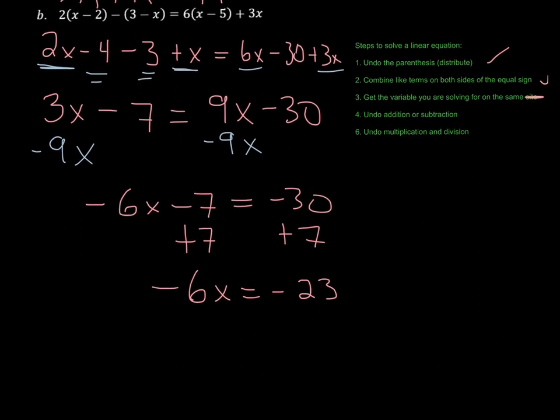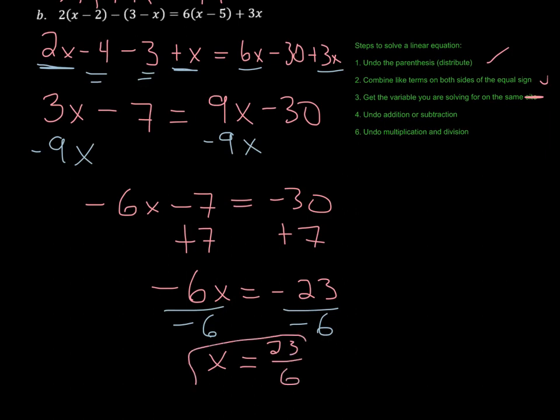Last thing we need to do is undo any multiplication or division. So I'm going to go ahead and divide both sides by negative 6. And we're going to get x is equal to negative divided by a negative is going to give us a positive 23 over 6. And there's our final answer.